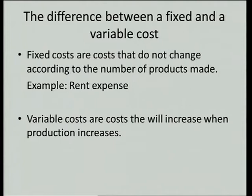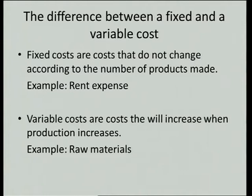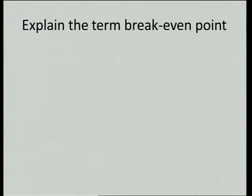Then you have a variable cost. Variable costs are costs that will increase when production increases. So as your production increases or decreases, that cost will increase or decrease. The example here is raw materials. If I produce five units, I only need raw materials for five units, but if I produce a thousand units I need raw materials for a thousand units. My raw material expense will be more if I produce more units, but my rent expense stays the same whether I produce five or a thousand.